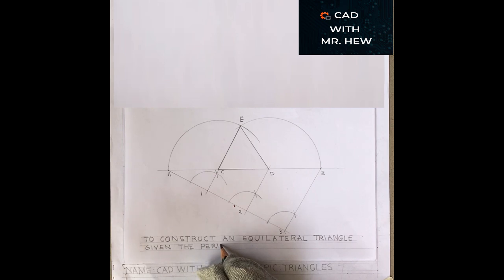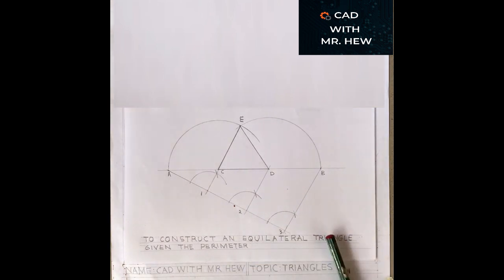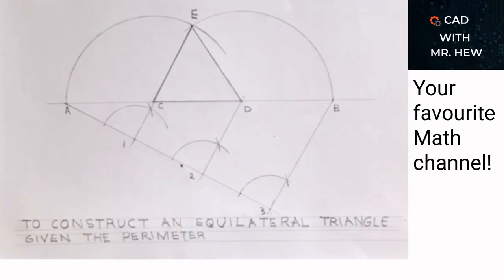Good job if you followed along. We have come to the end of today's video. In today's video we looked at the construction of an equilateral triangle given the perimeter. In the next video, we will be looking at how to divide a line into a given ratio.